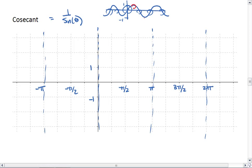However, when sine is 1 or negative 1, the reciprocal of 1 is 1, and the reciprocal of negative 1 is negative 1. So we get points that match up.